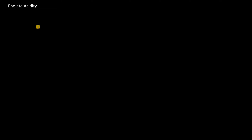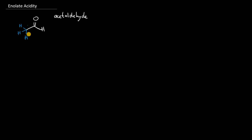Let's start with acetaldehyde, a simple carbonyl. Acetaldehyde is a two-carbon carbonyl — it's an aldehyde, where it has one methyl group and one hydrogen coming off of the carbonyl. Let's focus on this carbon here. It's a methyl group and it's terminal, so we know it has three hydrogens. And because it's directly adjacent to the carbonyl carbon, we call it alpha.